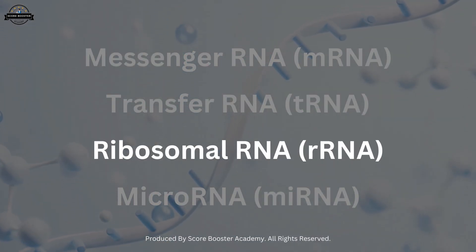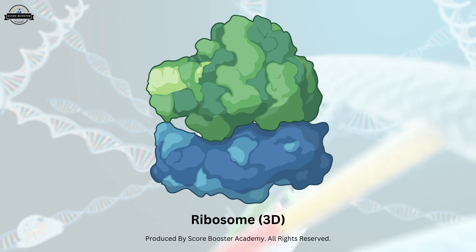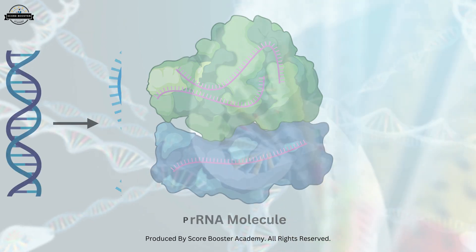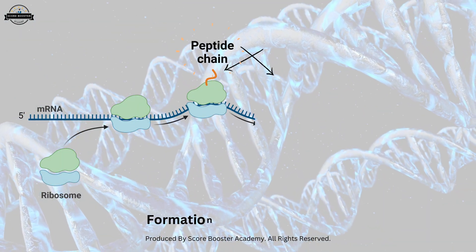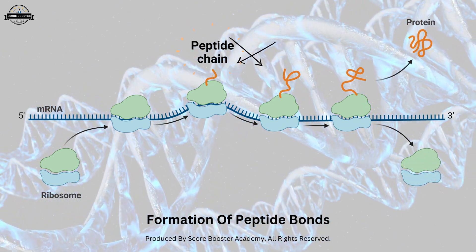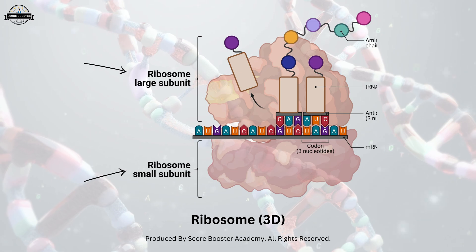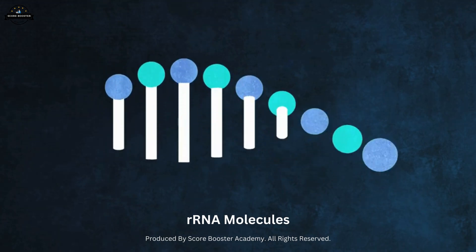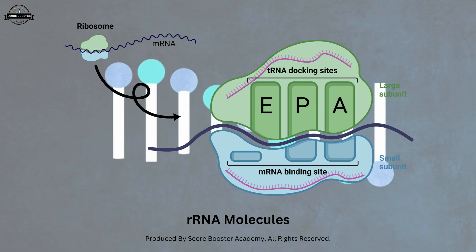Ribosomal RNA, or rRNA, is a component of ribosomes — the molecular machines that synthesize proteins. rRNA molecules play an active role in protein synthesis; they facilitate the alignment of mRNA and tRNA and catalyze the formation of peptide bonds. Ribosomes are made up of a large and a small subunit, each containing specific rRNA molecules. These rRNA molecules ensure the ribosome functions correctly, making protein synthesis efficient and accurate.